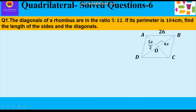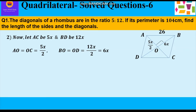Now let us calculate the length of the diagonals. Let us assume AC to be 5x and BD to be 12x. Diagonals in a rhombus bisect each other, meaning they divide each other into equal parts. So AO = OC = half of AC = 5x/2, and BO = OD = half of BD = 12x/2 = 6x.